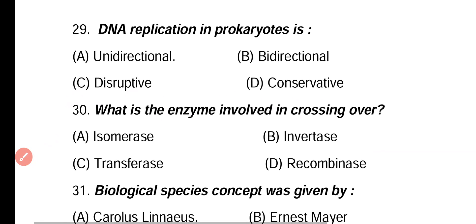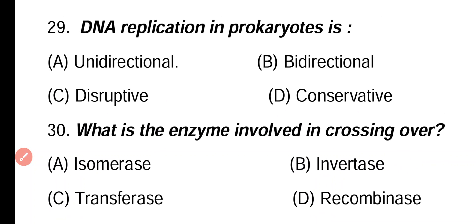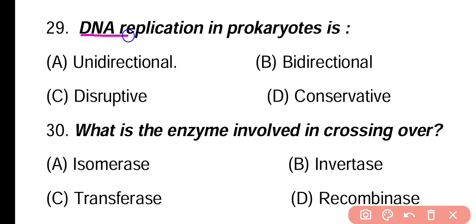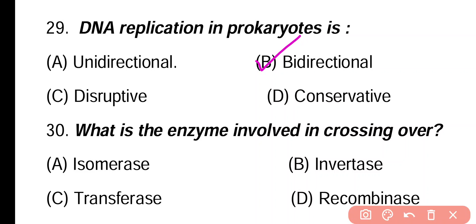Question 29. DNA replication in prokaryotes is: unidirectional, bidirectional, disruptive, conservative. Correct answer is option B. In prokaryotes, DNA replication is a bidirectional and continuous process. In eukaryotes, it is unidirectional and semi-discontinuous.